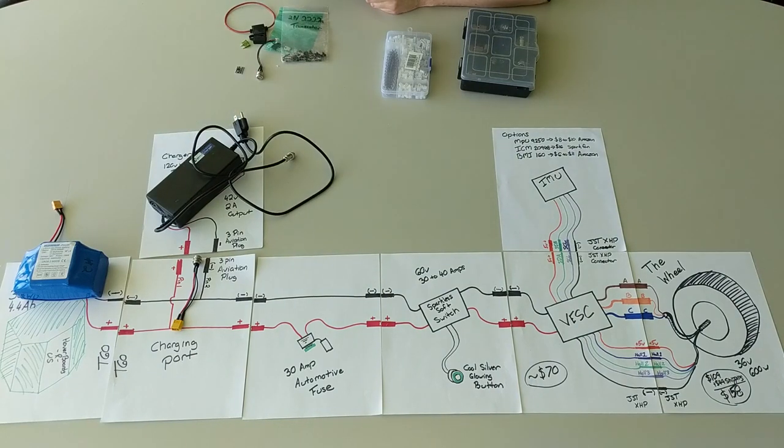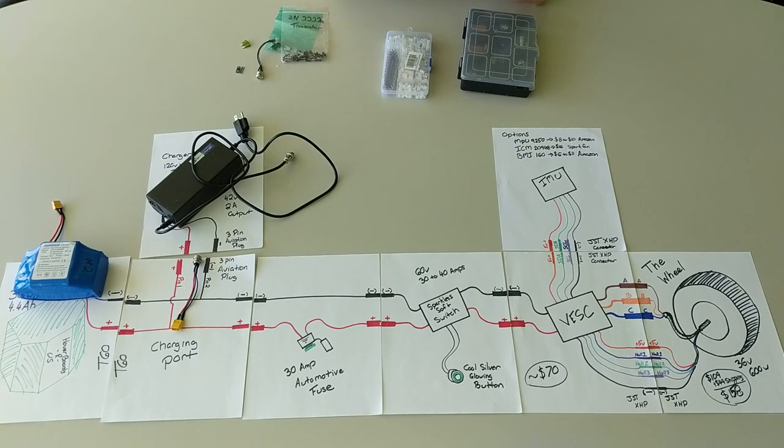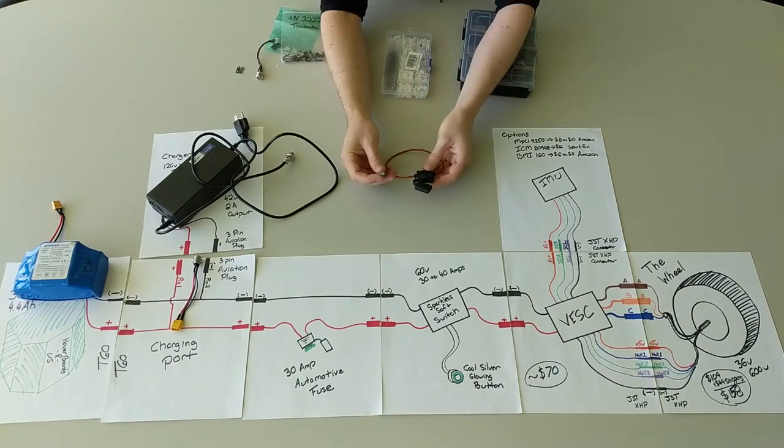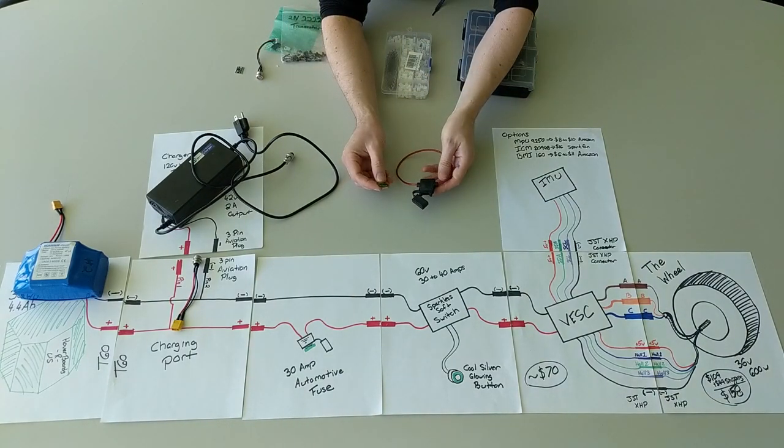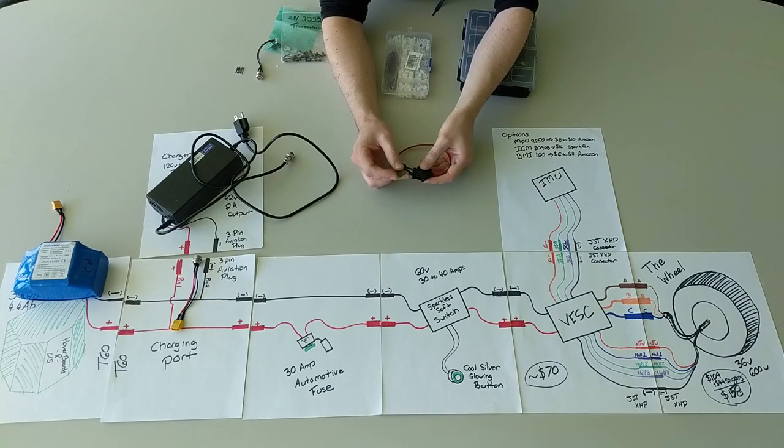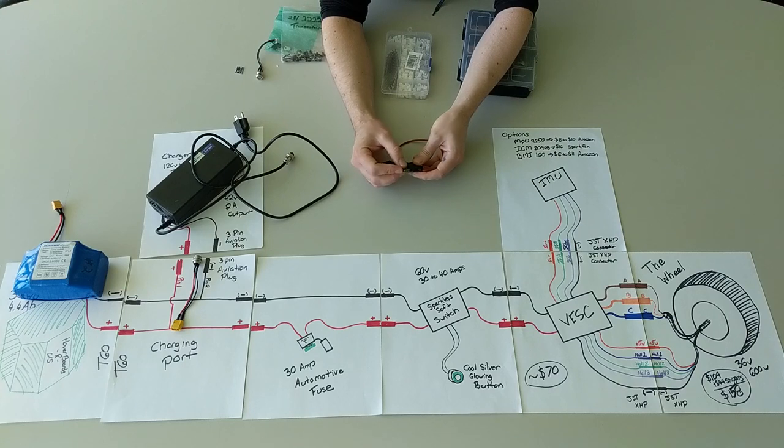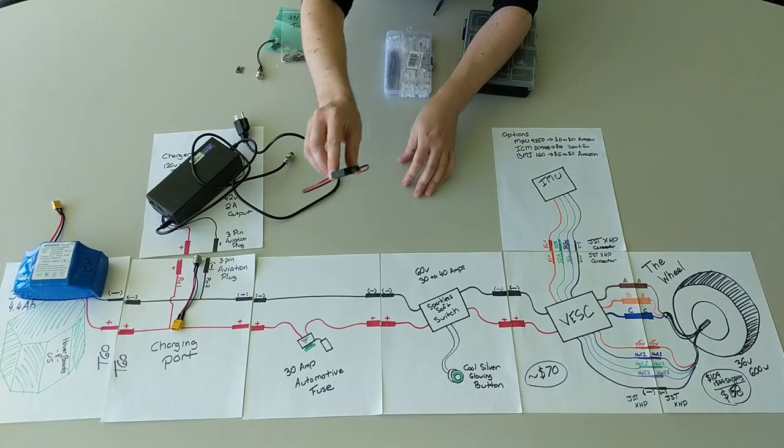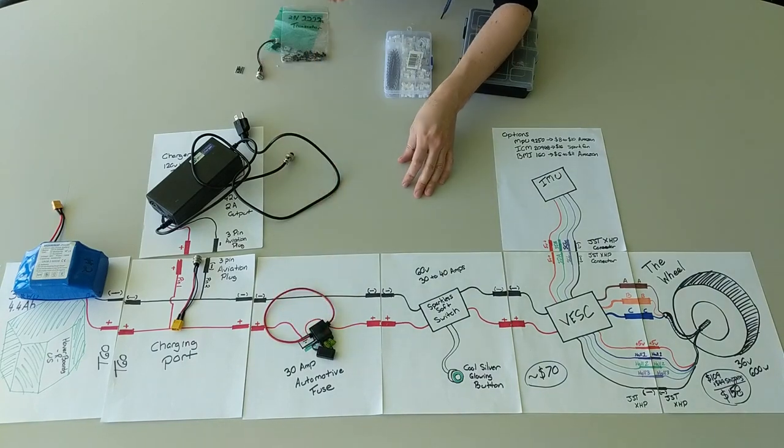After the charging port but before we get to the meat of the circuitry, we're going to have a fuse, and in this case we're going to use a 30 amp automotive blade fuse. The reason we're going to use these is because I have a stack of them in the building. They're reliable, they're easy to find, and we don't have to go out and buy anything.